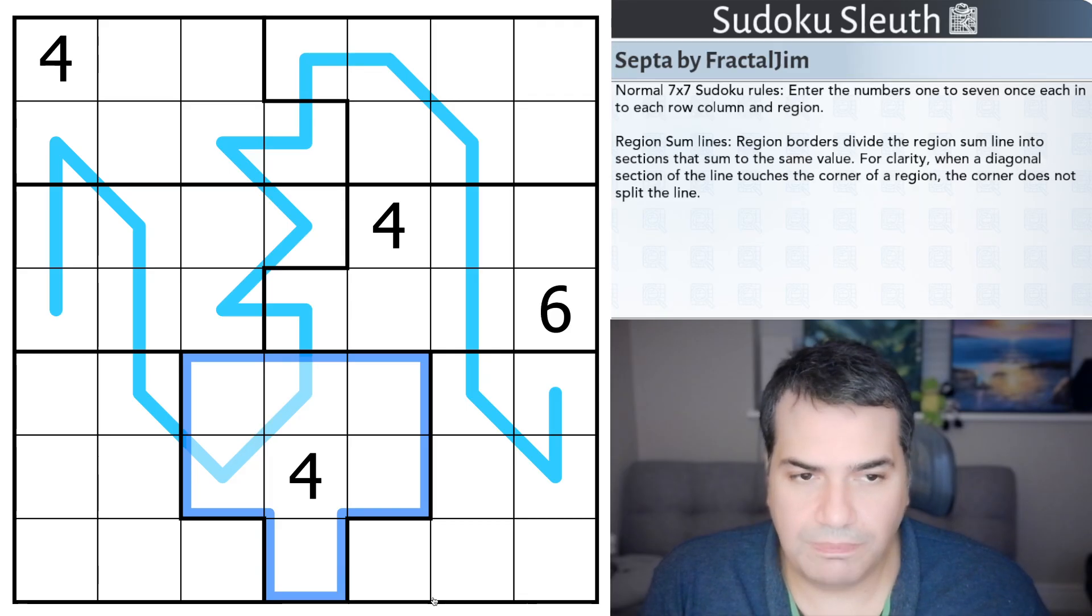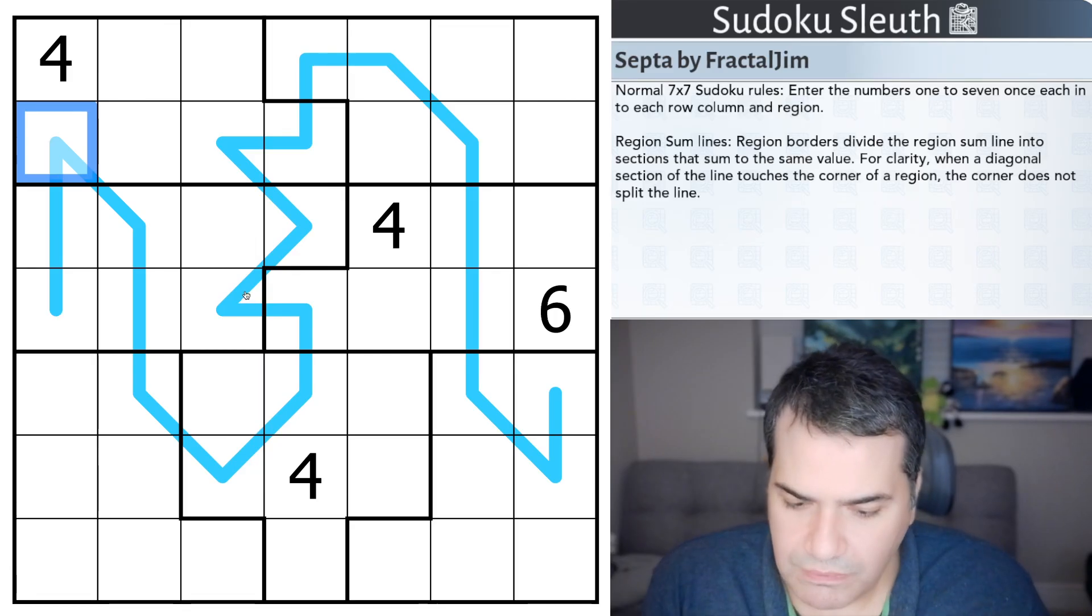We don't have boxes or rectangles today. I think it will be very difficult to do so with 7 in here. And they're not necessarily even regularly the same shape. So, you've got this kind of rectangle with an additional square. But this one here almost looks like an inverted, not an inverted, just a T. What else do we have? Region sum lines. So, the blue line in here is a region sum line. So, the region's borders divide the region sum line into sections that sum to the same value.